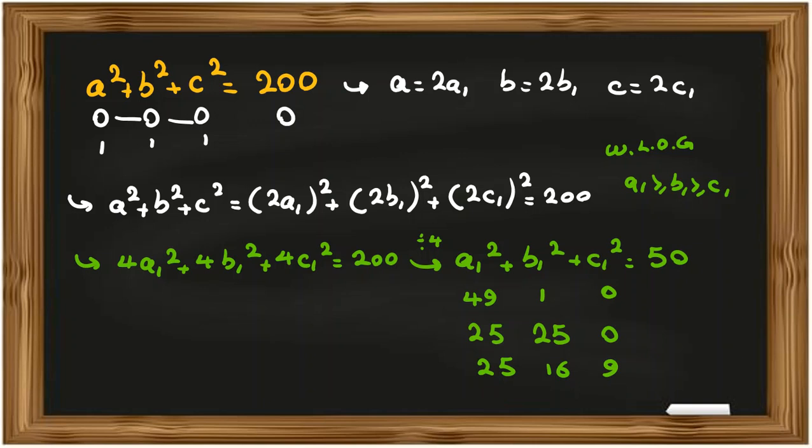Now, we want to find a plus b plus c. a plus b plus c equal to 2 times a1 plus b1 plus c1. Now, here, we've reached that a1, b1, c1. So, let's write the cases.